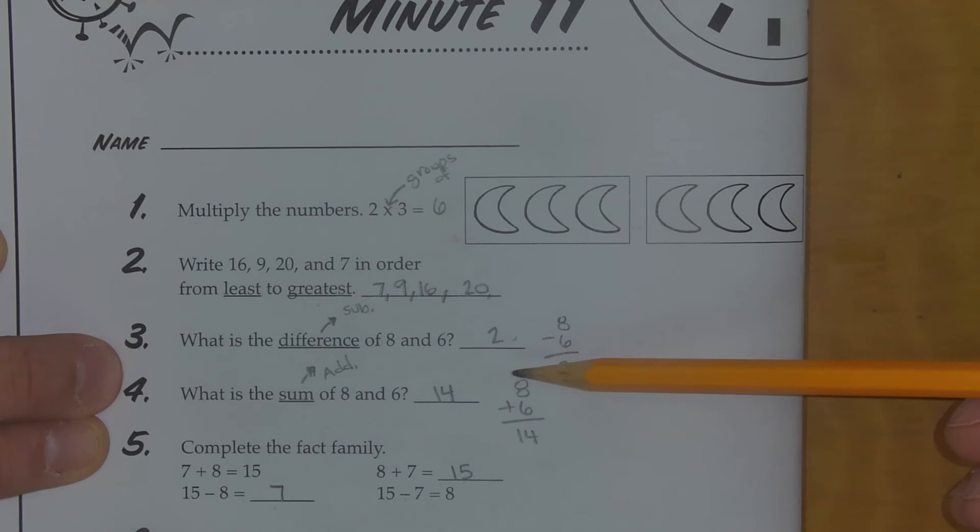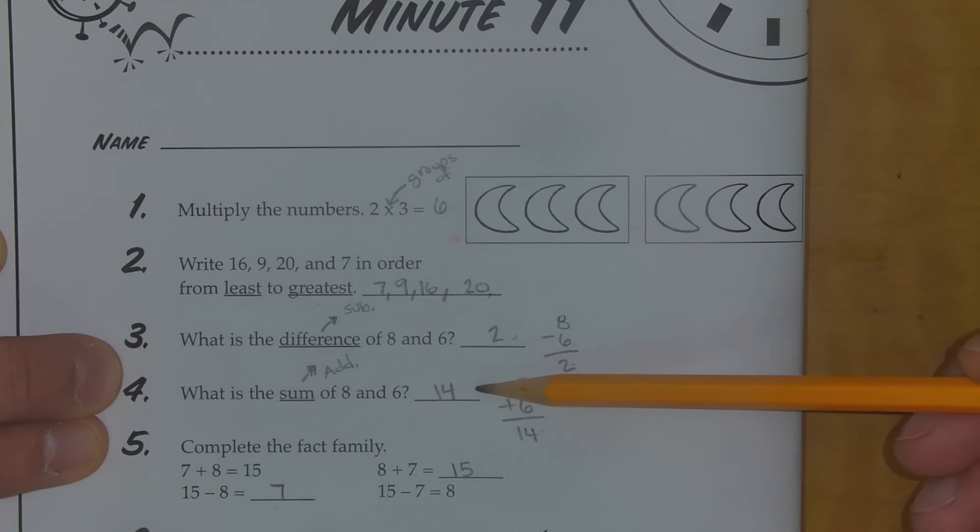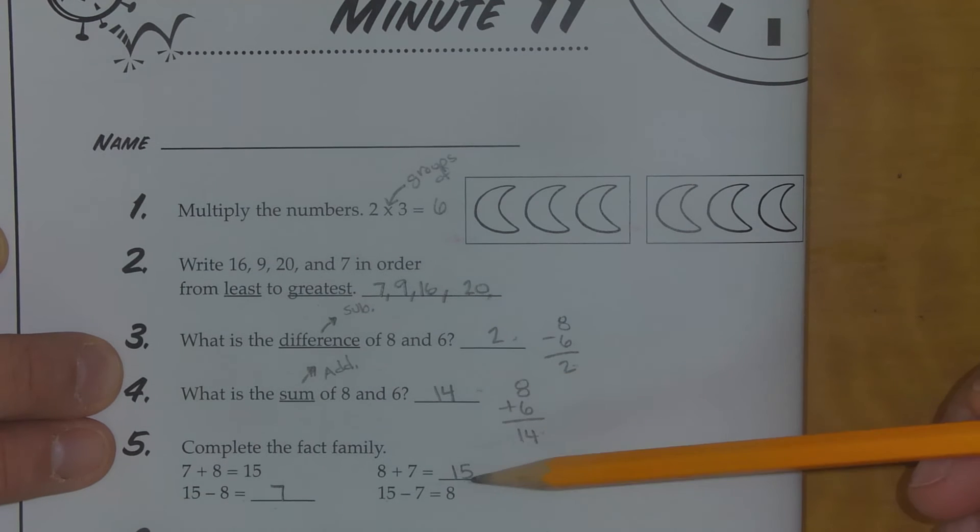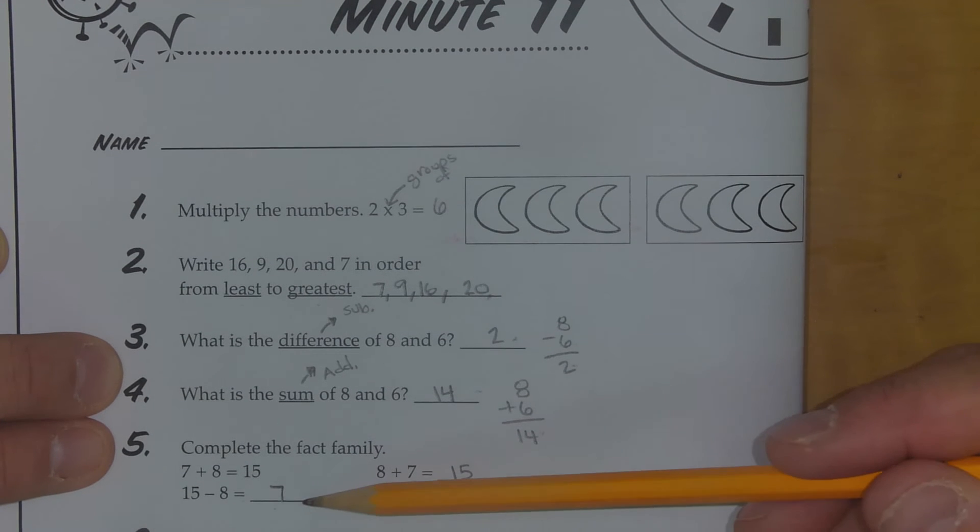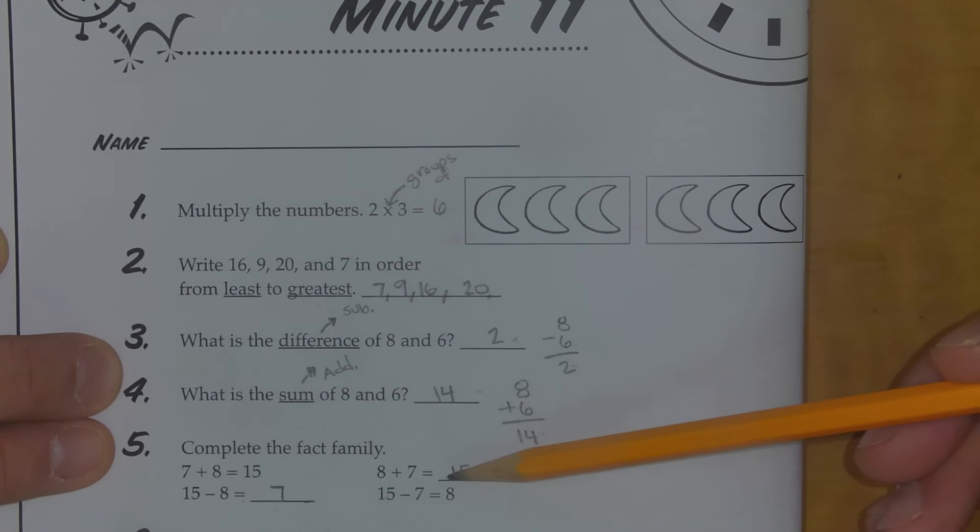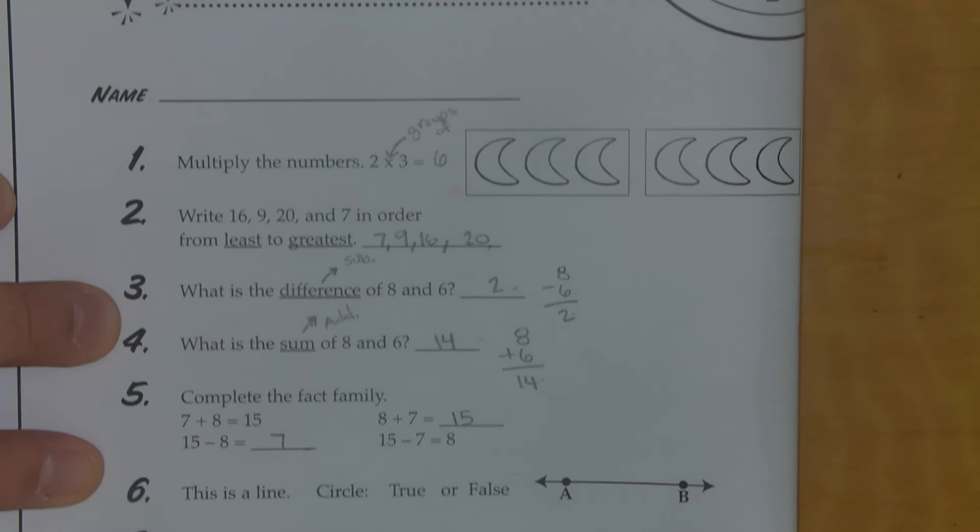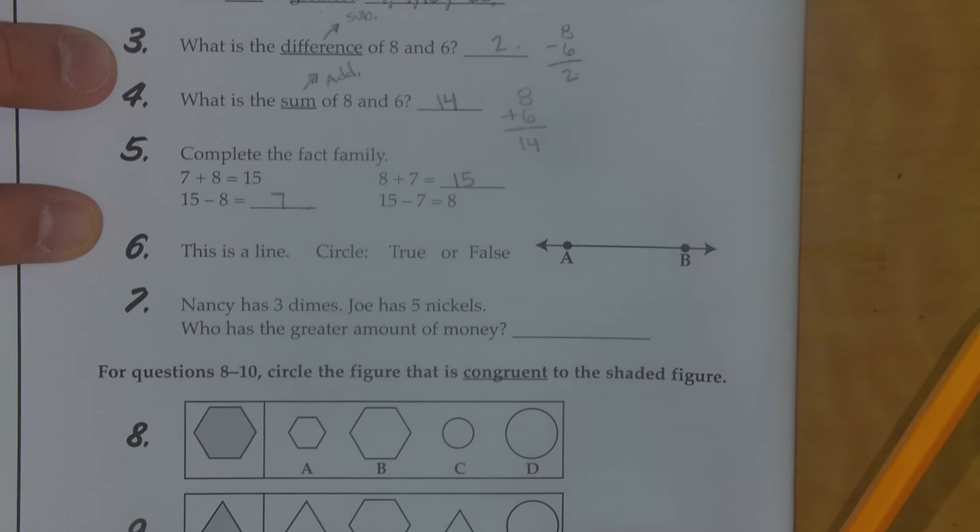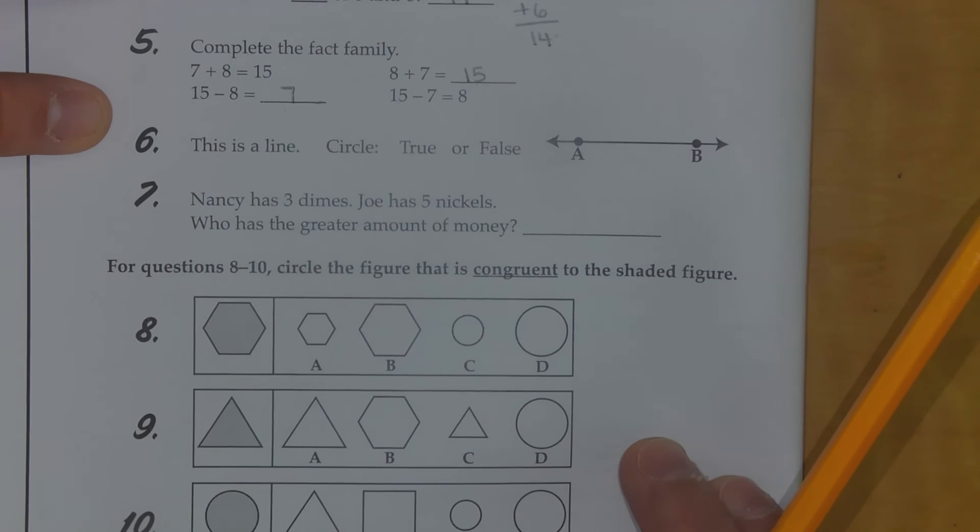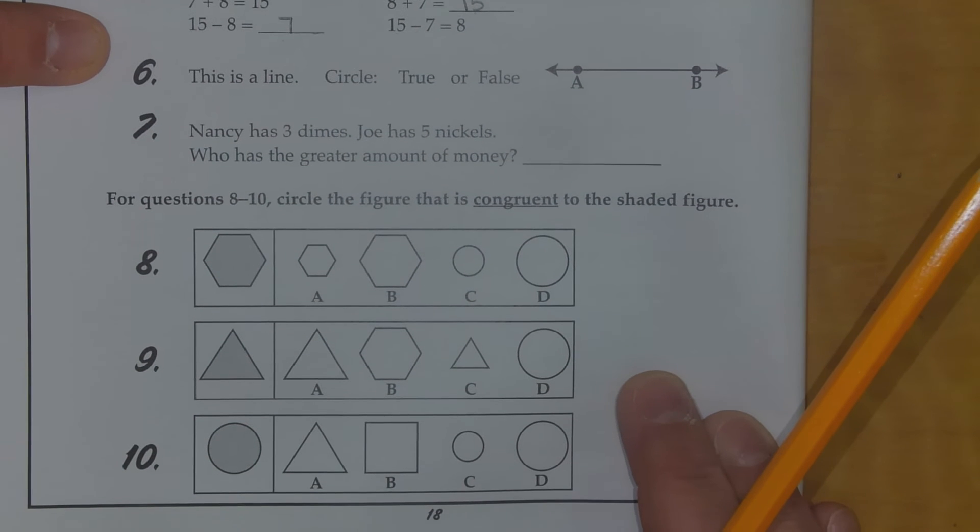Number 4: what's the sum of 8 and 6? 8 plus 6 is 14. I put my 14 here. Number 5: 15 minus 8 is 7, and 8 plus 7 is 15. Those should be my answers. And we're going to slide up and talk through 6, 7, 8, 9, and 10 as soon as I get them on the page.